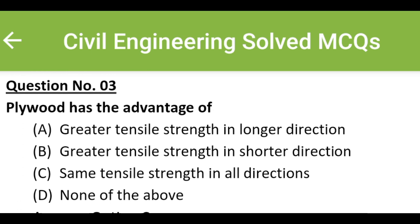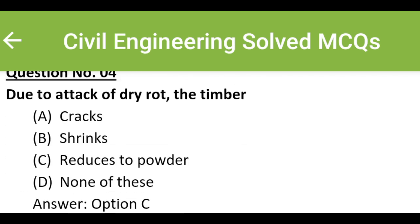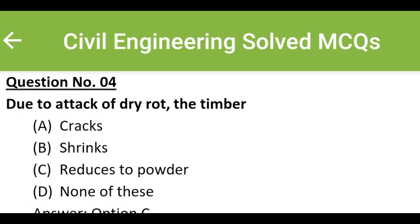Plywood has the advantage of: Option A: greater tensile strength in longer direction, Option B: greater tensile strength in shorter direction, Option C: same tensile strength in all directions, Option D: none of the above. The correct answer is Option C: same tensile strength in all directions.